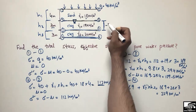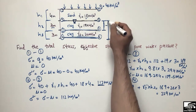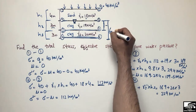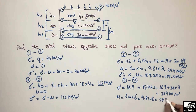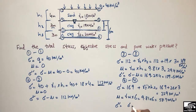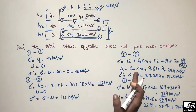The pore water pressure at point 4-4 is based on the full water column from point 2-2 to point 4-4, which is 3 + 3 = 6 meters. So pore water pressure = gamma_w × 6 = 9.81 × 6 = 58.9 kN/m². The effective stress equals total stress minus pore water pressure: 229 − 58.9 = 170.1 kN/m².